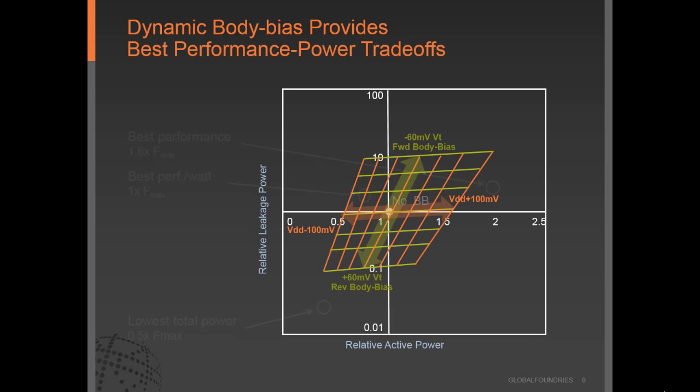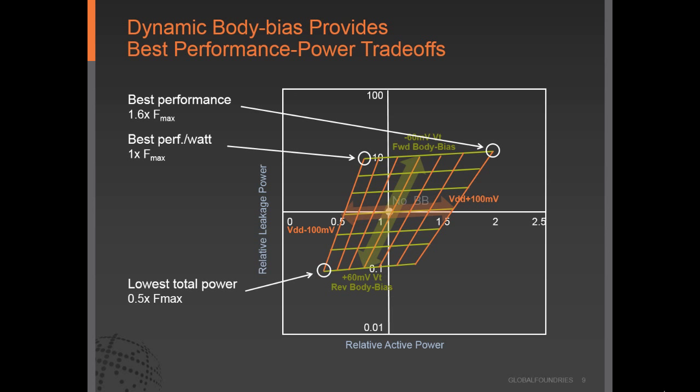Forward body bias plus an overdrive condition can be used to achieve the best performance by operating at very low VDD with forward body bias. This can be used to operate at low active power without sacrificing performance because you're maintaining the VDD minus VT headroom. And by using both reverse body bias and underdriving the voltage, the lowest total power — both leakage and active — can be achieved in the design.